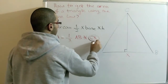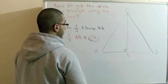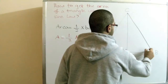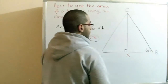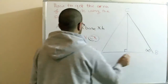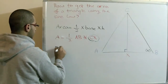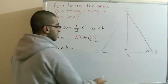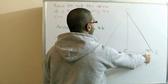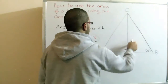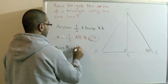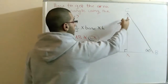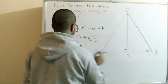We want to find the value of CX. Let's say this angle is, for example, 60 degrees. The sine of angle B equals the opposite over the hypotenuse, so it equals CX over BC.